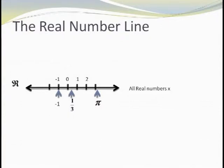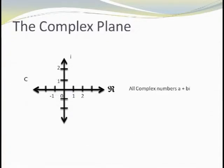You may recall that the real number line provided us a useful model to help us understand the real numbers. Every point on the line corresponded to some real number, and every real number had a corresponding point. Complex numbers, on the other hand, are of the form a plus bi. Since a and b can both be any real numbers, we need a separate number line for each value. The easiest solution is to make a rectangular plane, just like the one we use for graphing.